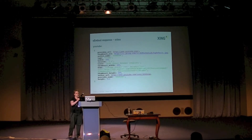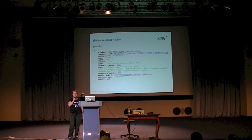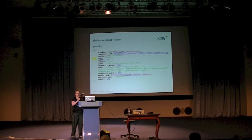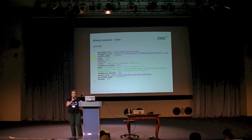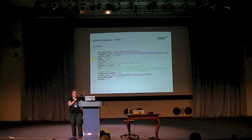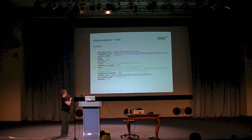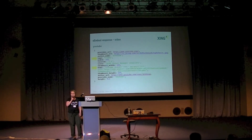Here is an example response from YouTube. An oEmbed response is a set of metadata describing how to embed the media resource — in this case the video. Every oEmbed response has a field 'type.' In case of YouTube, not surprisingly, the type is 'video.' Every response of type video contains a field 'html', which is a ready-to-use HTML snippet you can embed into your site. In case of YouTube this is an iFrame, which is pretty common, but it doesn't have to be an iFrame.